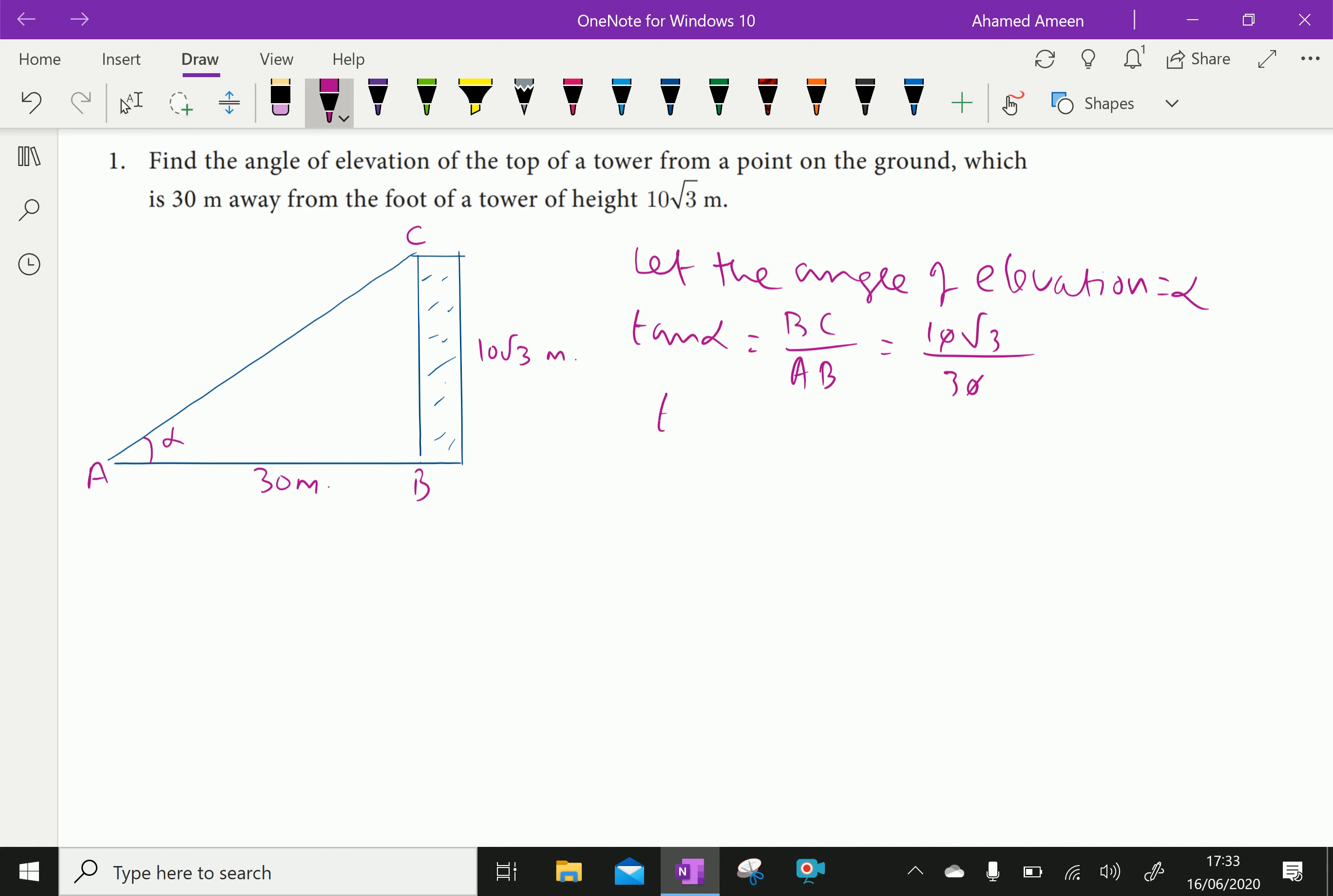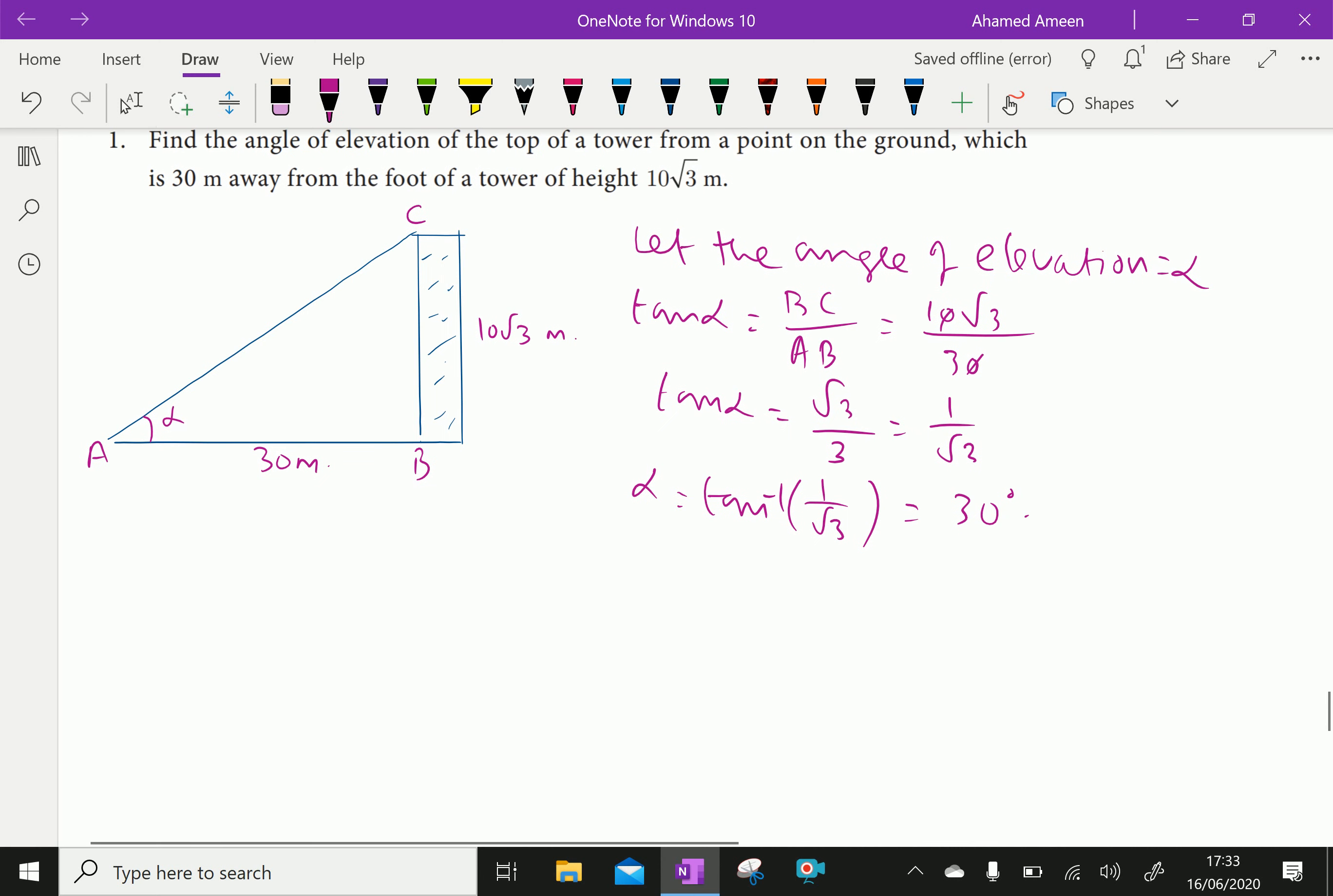Therefore, we have tan alpha equal root 3 by 3, which is further equal 1 over root 3. Now, therefore, alpha equal tan inverse of 1 over root 3, which is equal 30 degrees. Therefore, alpha equal to 30 degree.